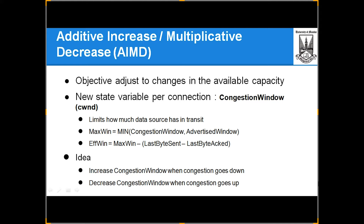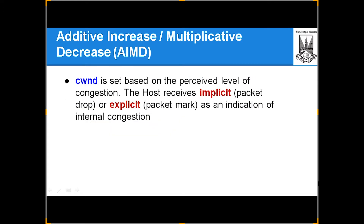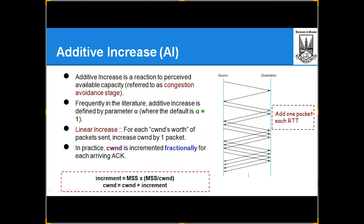Increase the congestion window when congestion goes down, and decrease the congestion window when congestion goes up. The congestion window is set based on the perceived level of congestion. The host receives implicit signals — packet drop or explicit packet mark — as an indication of congestion. Additive increase is a reaction to perceived available capacity, referred to as the congestion avoidance stage. In the literature, additive increase is defined by parameter alpha, where the default is alpha = 1, a linear increase.